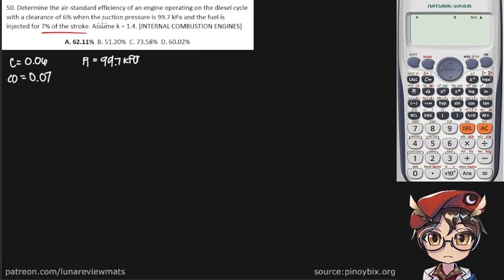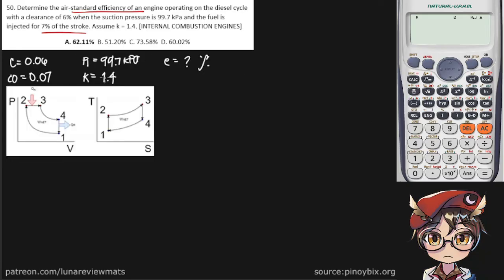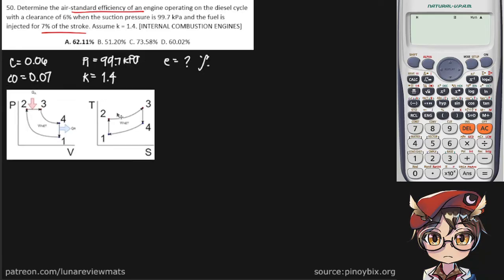Assume K is equal to 1.4, and it looks like we need to determine the air standard efficiency, also known as the cycle efficiency, in percent. So again, here's our diesel cycle diagram. It's always a good idea to have this at the back of your mind when solving anything diesel-related.